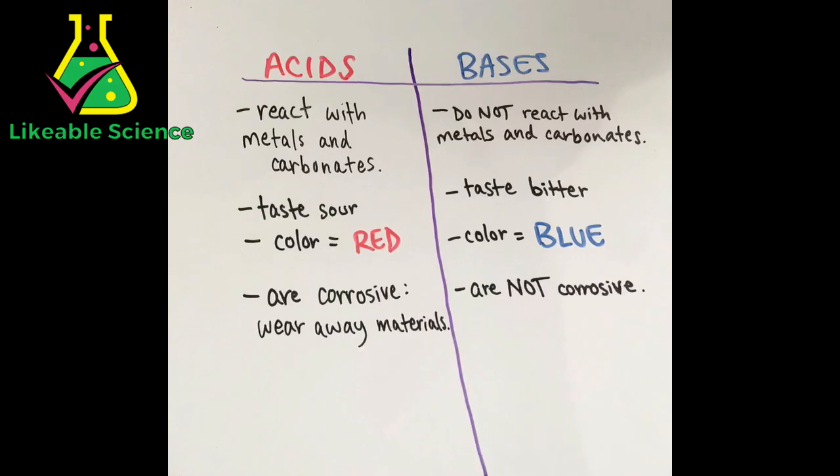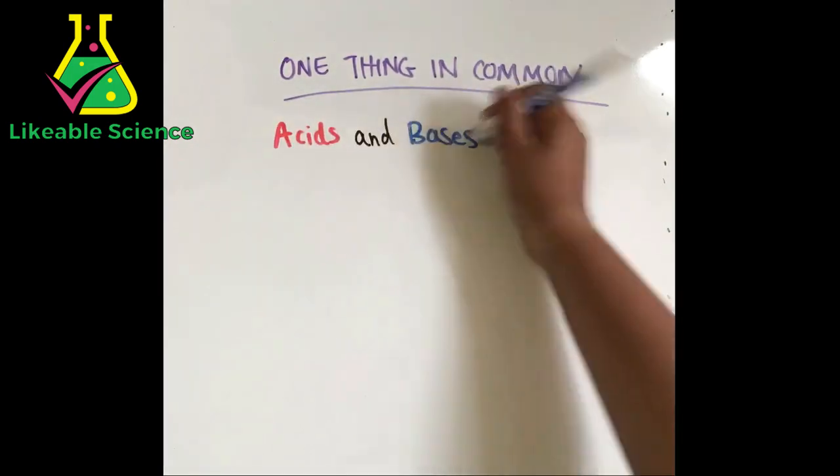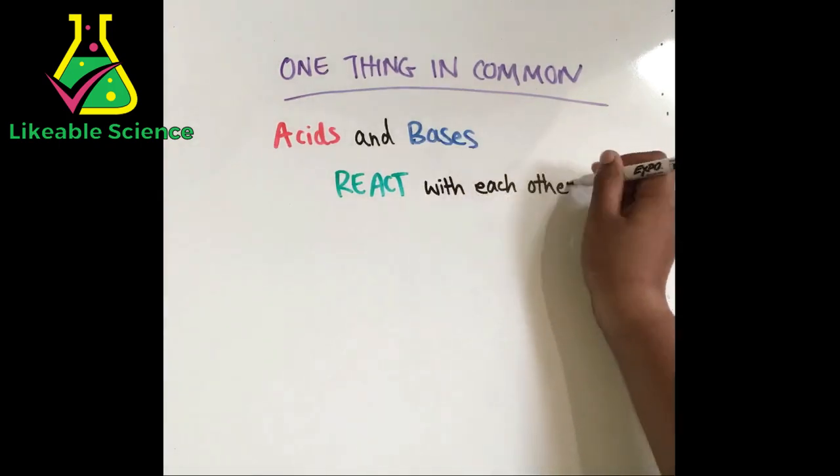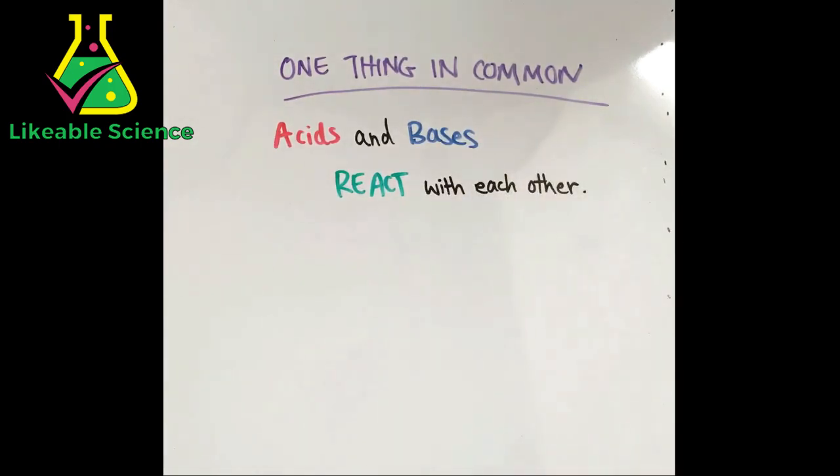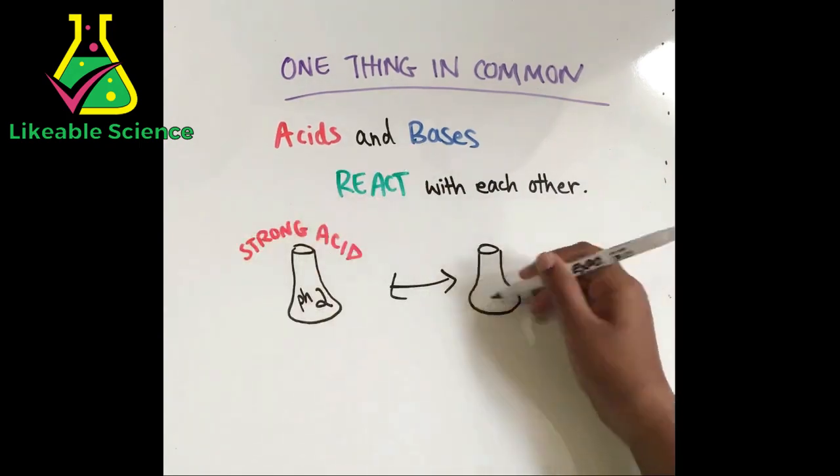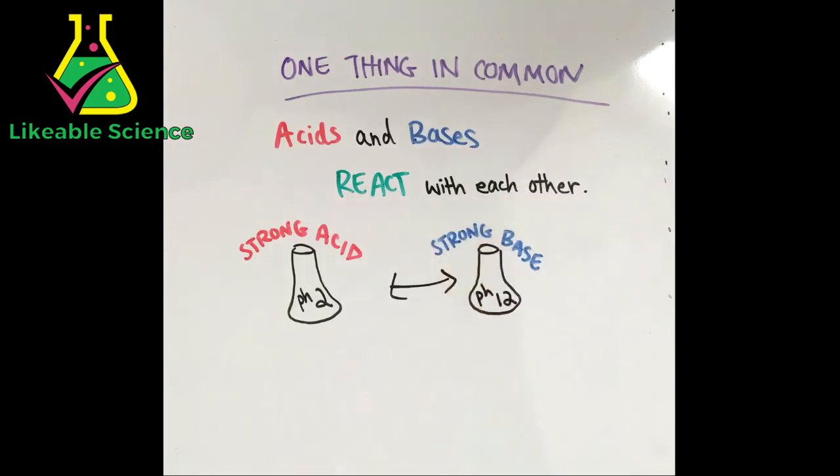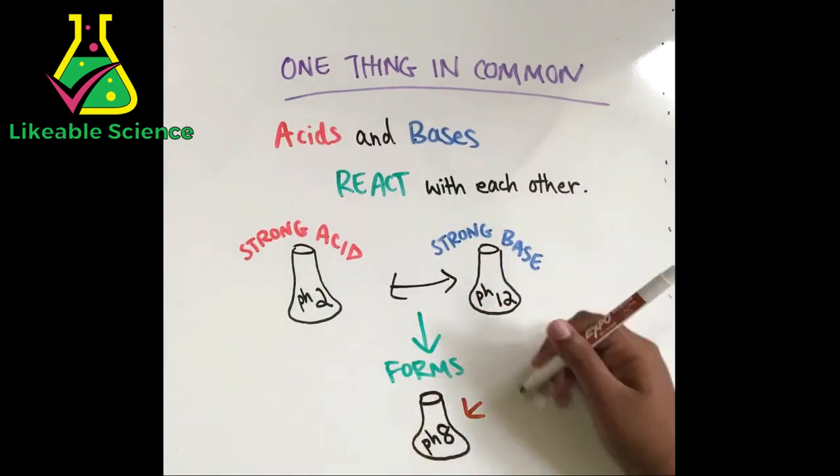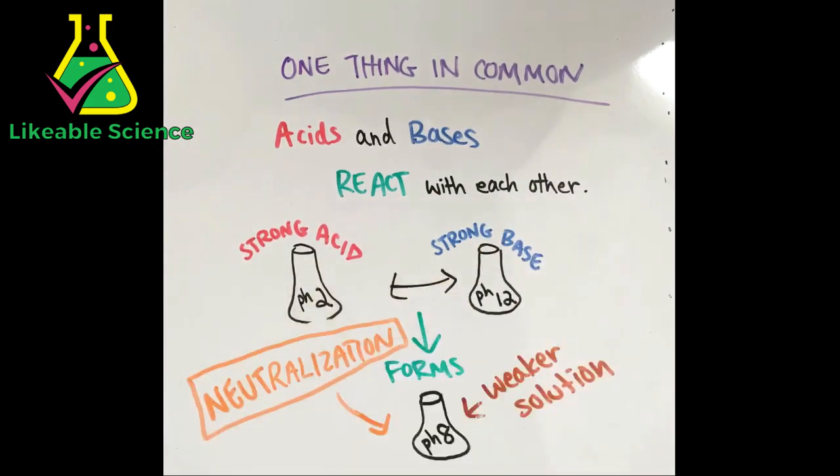They have a lot of differences, but they have one thing in common: acids and bases react with each other. Let's take a strong acid, a pH 2 for example, and make it react with a strong base of pH 12. What they form is a weaker, more neutral solution. This is what we call neutralization.